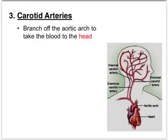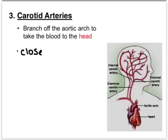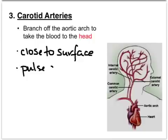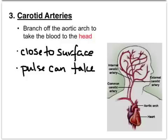The third major blood vessels are the carotid arteries. There is no carotid vein — the return vessel from the head is the jugular, which we'll discuss next. The carotid arteries branch off the aortic arch and carry blood up into the head region. They are very close to the surface, which is where we typically take our pulse — either at the neck or at the wrist during exercise.